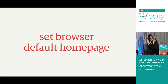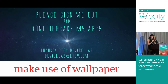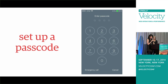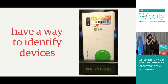Make use of the browser default homepage — we set ours to etsy.com so we could easily test how our website looks through the mobile browser. Make use of the wallpaper: ours just says 'sign me out and don't touch anything' and how to reach us in case you need help — good for at-a-glance information and policies. Setting up a passcode is really important — it prevents just anyone from using the device, and is important since the devices have access to our testing and staging environment. The passcode should be the same on all devices. Having a way to identify your devices is also really important — give each device an asset tag or some sort of physical identifier.